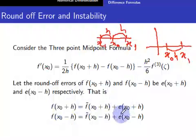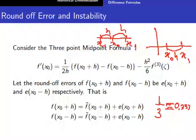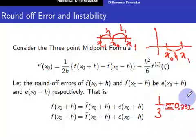Our computer has finite memory capacity — it is not infinite. So if you ask a computer to store 1/3, you know that 1/3 is equal to 0.333... in decimal, and you get an infinite number of 3's. Our computer has finitely many memory capacity, so when the computer stores 1/3, this infinite sequence gets cut off.